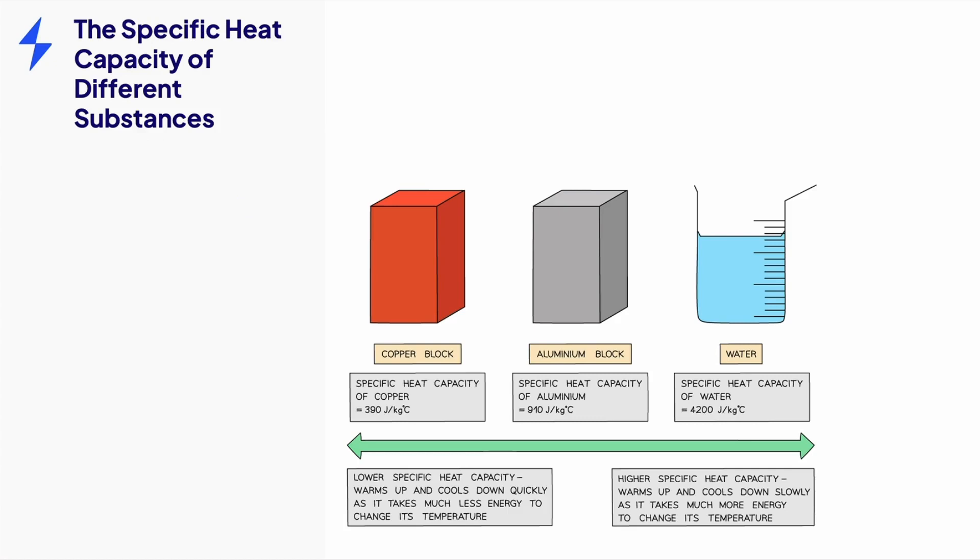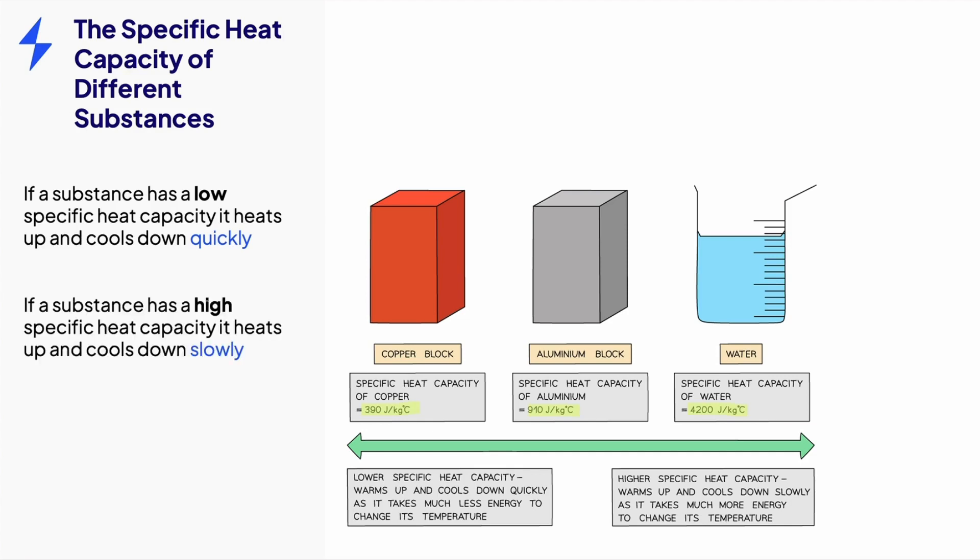The specific heat capacity is the property of a substance which has been scientifically agreed upon through thorough experiments. Here are a few examples. Copper has a lower specific heat capacity than aluminium, which is lower than water. The lower the specific heat capacity, the quicker a substance heats up and cools down, and vice versa.